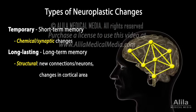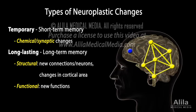Neuroplastic changes can also be functional, meaning neurons may adopt a new function when they are sufficiently stimulated. This is how the brain survives injuries, such as strokes. Healthy brain tissues can take over the functions of the damaged area during post-stroke rehabilitation.